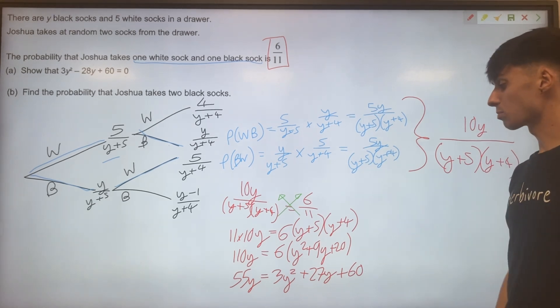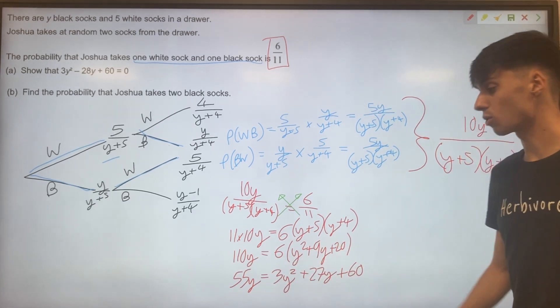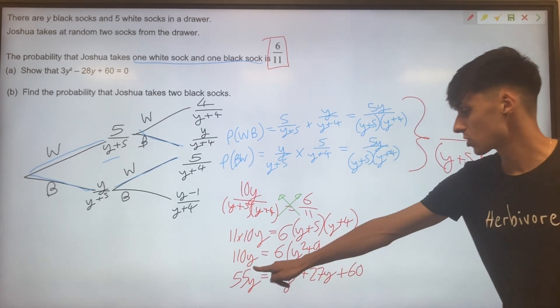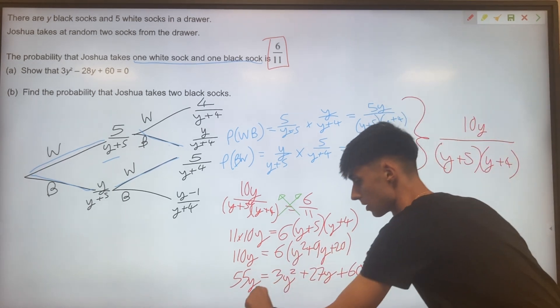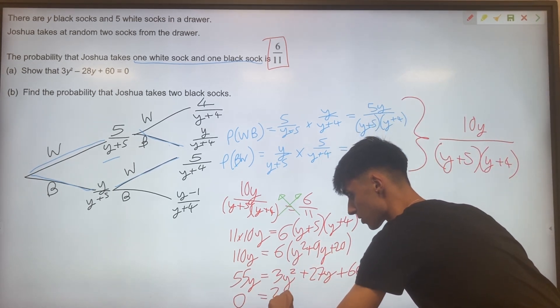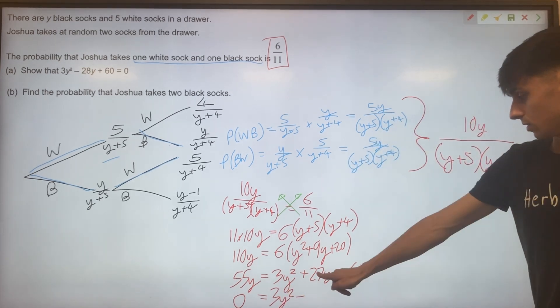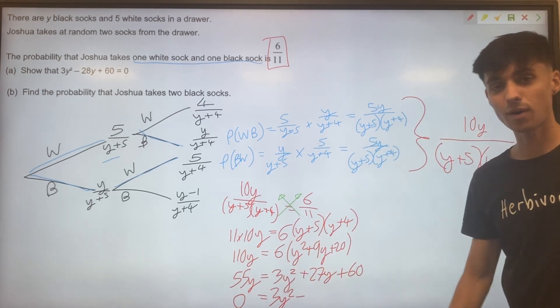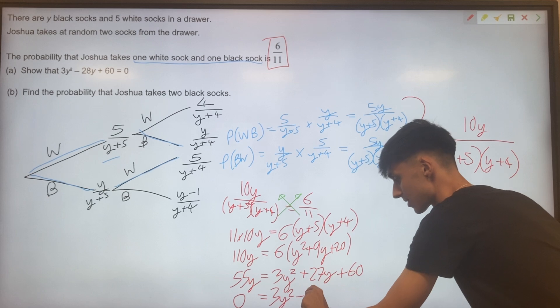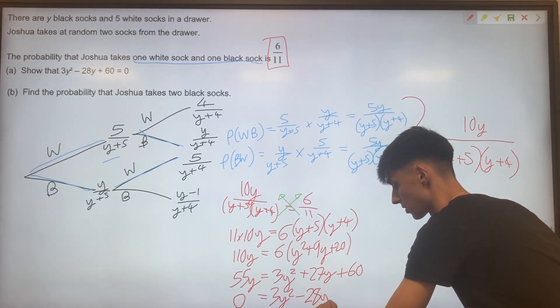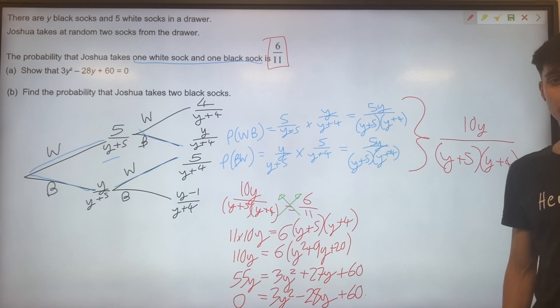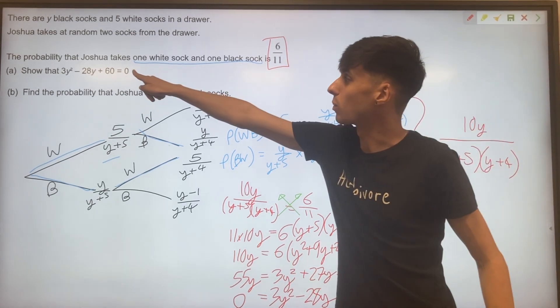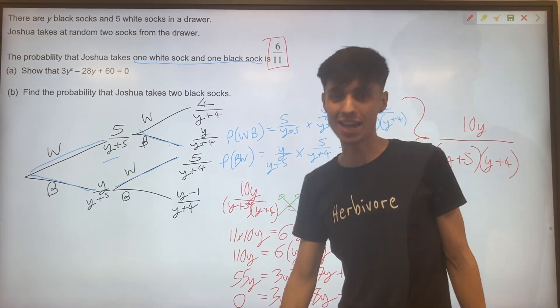This looks really promising for us. We just have to finish off on one last line. So subtracting 55y from both sides, you'll have 0 equals 3y squared. 27 take away 55 will be minus 28. So minus 28y plus 60. Brilliant. That's exactly what we wanted to prove in part A.